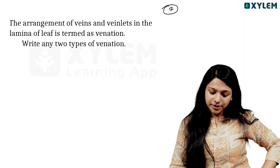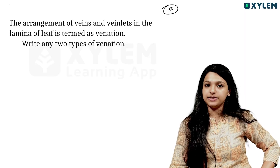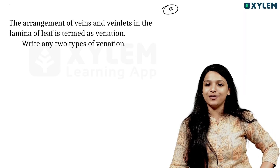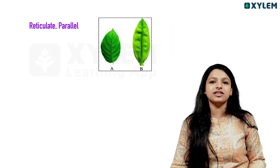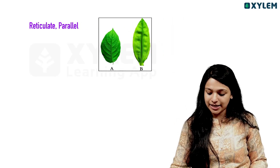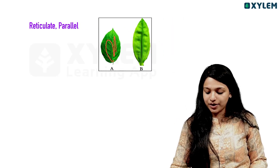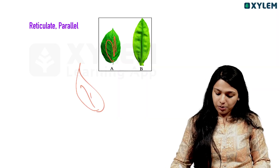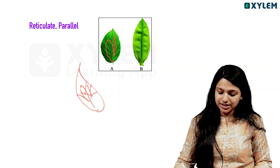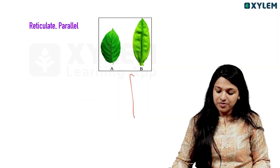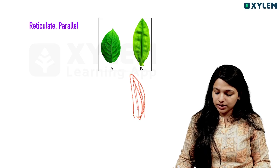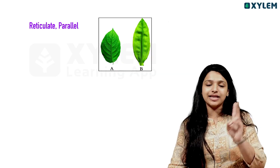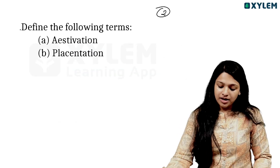The arrangement of veins and veinlets in the lamina of a leaf is termed venation. Write two types of venation. The two main types are Reticulate venation, where veins form a network, and Parallel venation.